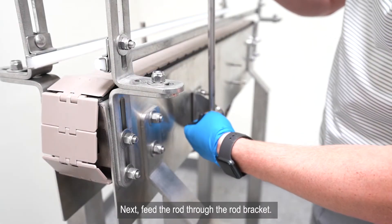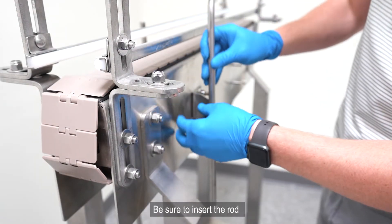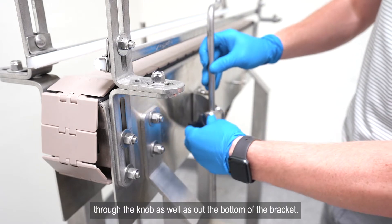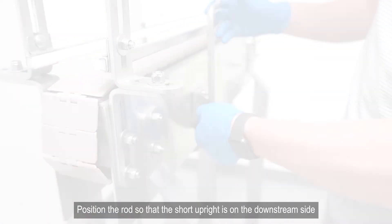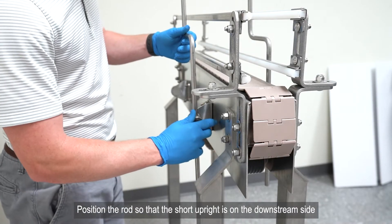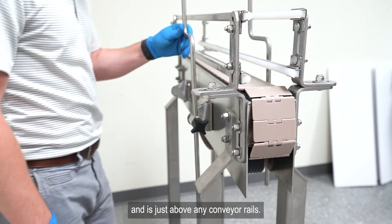Next, feed the rod through the rod bracket. Be sure to insert the rod through the knob as well as out the bottom of the bracket. Position the rod so that the short upright is on the downstream side and is just above any conveyor rails.